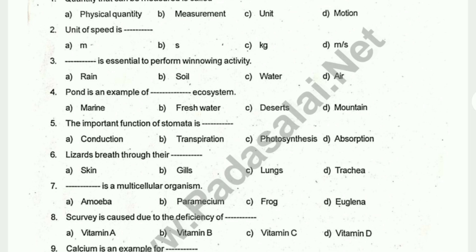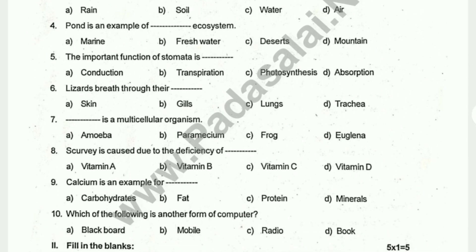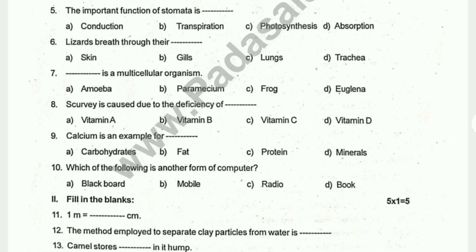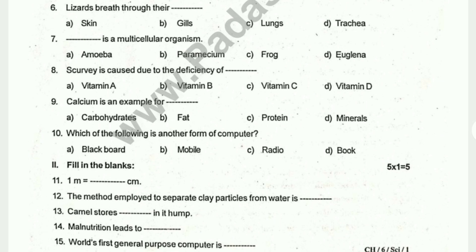First one: Quantity that can be measured is called ___. Unit of speed is ___. ___ is essential to perform a renewing activity. Quantity is an example of ___ ecosystem. The important function of stomata is ___. Lizards breed rodeo. ___ is a multicellular organism.